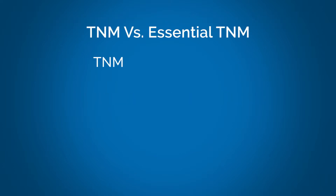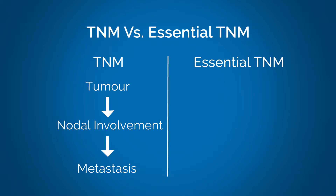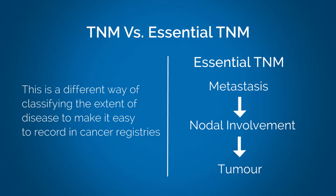Traditionally, in TNM, staging begins with the description of the tumor, and then the nodal involvement, and then the metastases. In Essential TNM, staging begins with the documentation of metastases. This is done to simplify TNM so lower and middle income countries can collect stage data. This is a different way of classifying the extent of disease to make it easy to record in cancer registries.